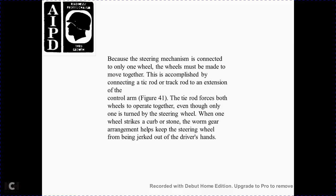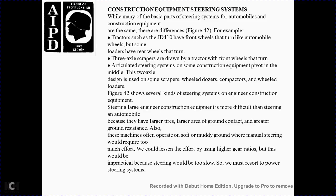Because of the steering mechanism, the connection only moves one wheel, but both wheels must move together. This is accomplished with the tie rod, also called the track rod, which is an extension of the control arm. Figure 41 shows the tie rod. Both wheels operate together even though only one is directly turned by the steering wheel. The worm gear arrangement also helps keep the steering wheel from being jerked out of the driver's hand.